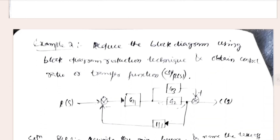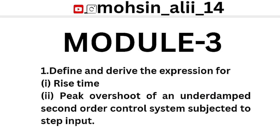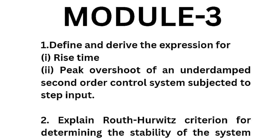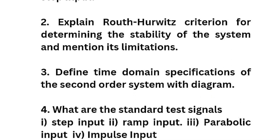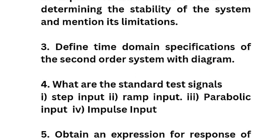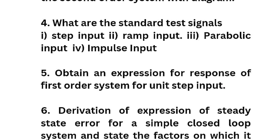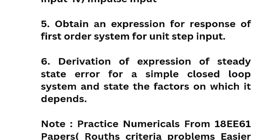Coming to module three, here are some important questions: define and derive the expression for rise time and peak overshoot of an under-damped second order control system subjected to step input; expand Routh's criteria for determining the stability of the system and mention its limitations; define time domain specifications of a second order system with a diagram; and list the standard test signals — step input, ramp input, parabolic input, impulse input. Also obtain an expression for the response of a first order system for unit step input.